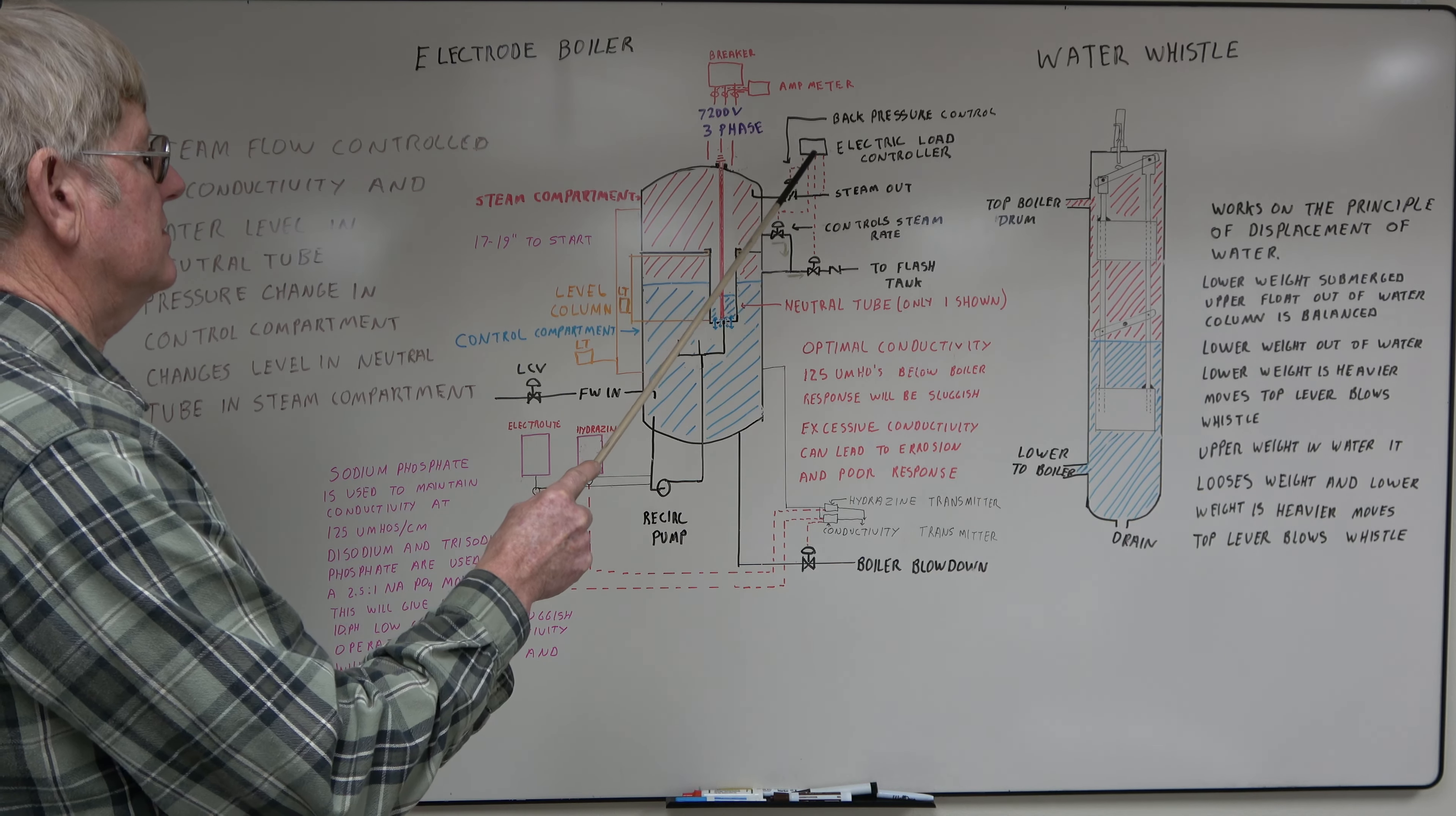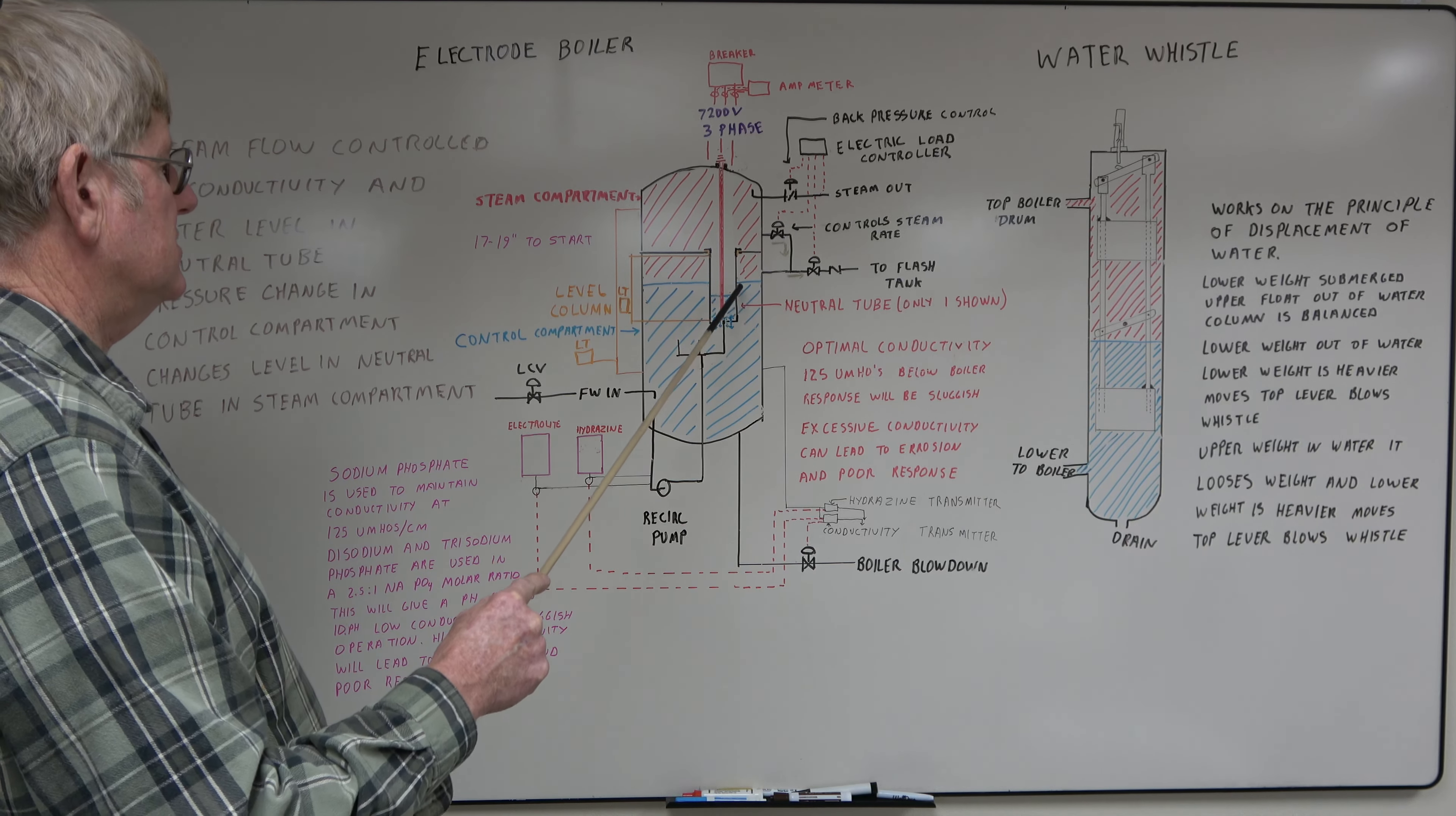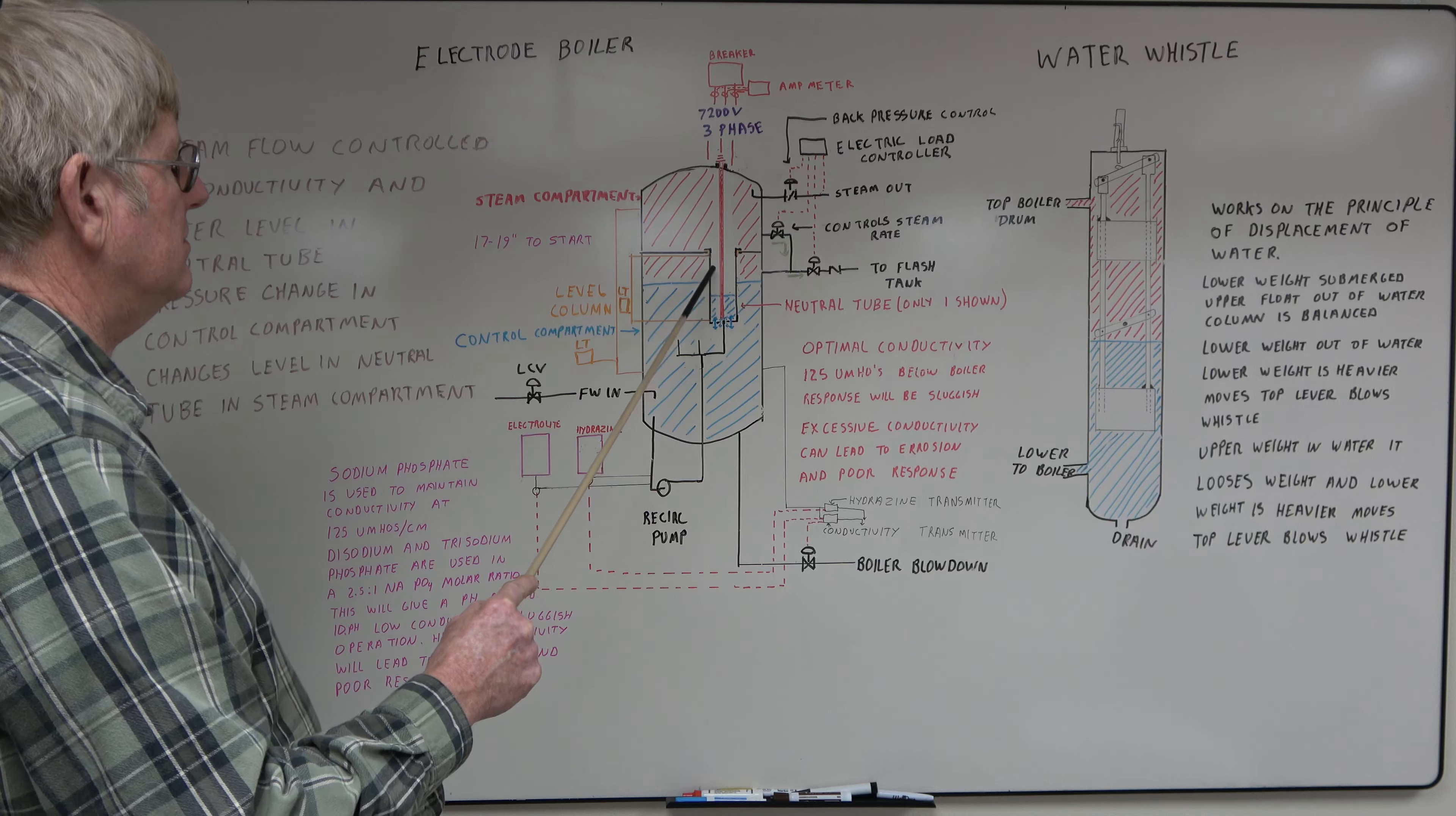It'll control your steam out valve. And then if you need more steam flow, it'll open up the pressure valve, put more pressure in here. As this pressure goes up, it forces more water up in the neutral tube. It causes more current to flow, more heat generated, more steam produced.